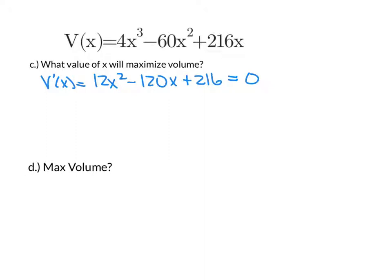I can divide both sides by 12, and doing so will give me x² - 10x + 18 = 0. This quadratic looks real nice and everything, but it's not going to be factorable.